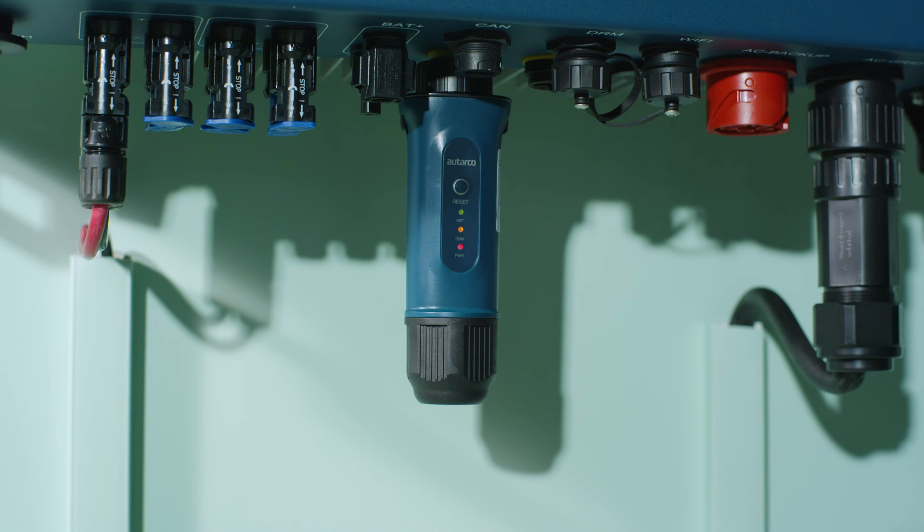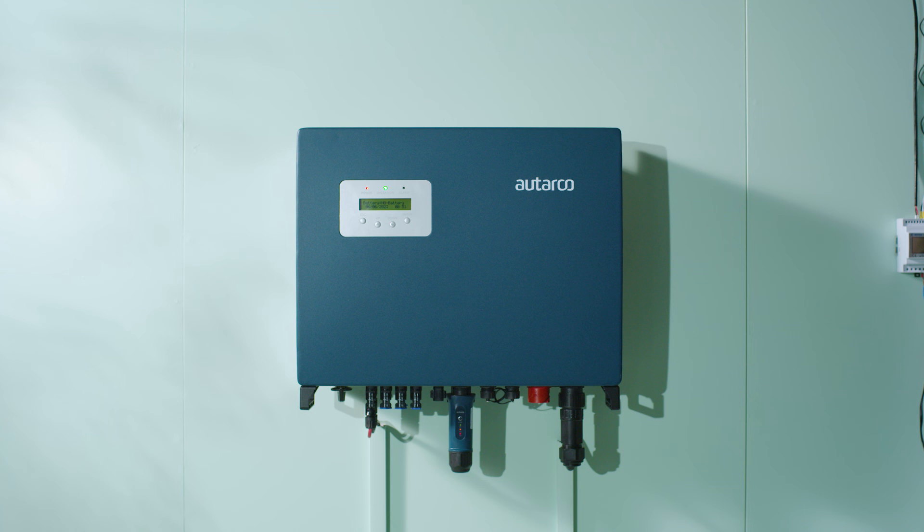Lastly, to obtain consumption data via the My Autarco app, you'll need to install and set up one of our sticks: WiFi stick, LAN stick, or 4G stick. To ensure that the clamps are positioned correctly for accurate consumption measurement, use the My Autarco app.